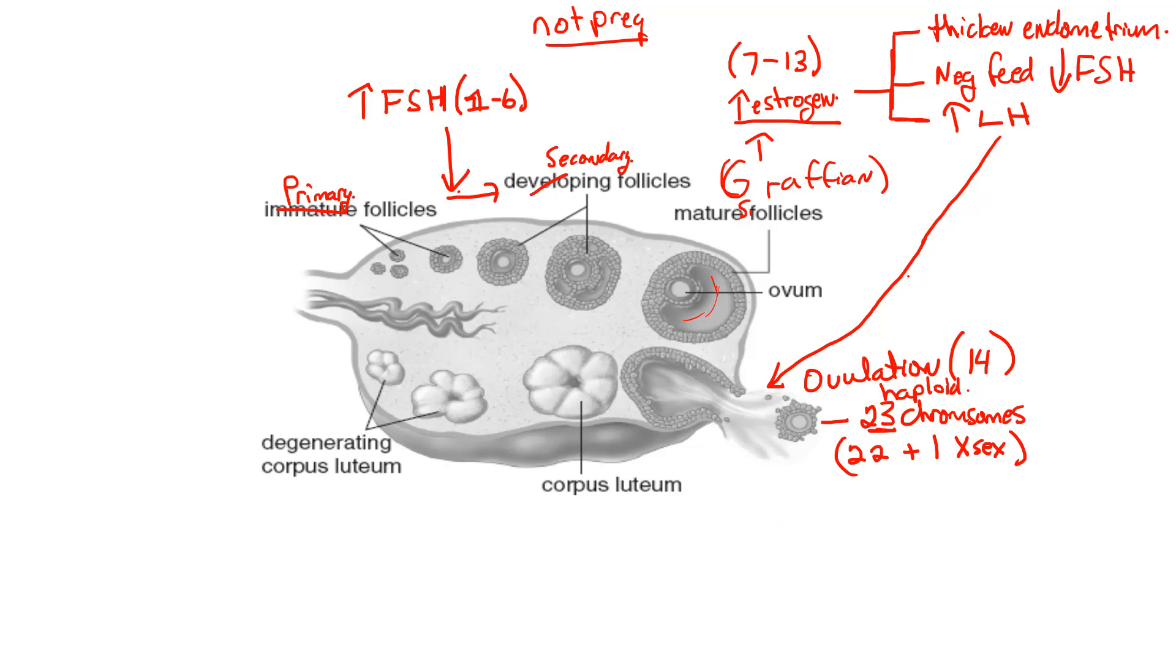The other thing that LH does is helps the development of this corpus luteum. So these remaining secondary follicle cells will then develop into the corpus luteum. And this corpus luteum does release high levels of progesterone. Now, of course, we're talking about if you are not pregnant, so if that egg is not fertilized. What's going to happen is this corpus is then going to degenerate, it's going to start to break down. But just before I do that, let's talk about the effects of high progesterone.